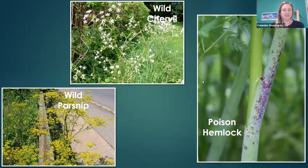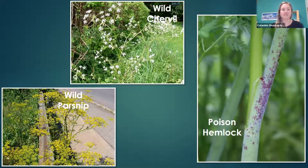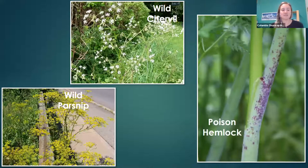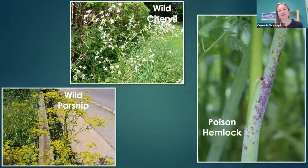The first in the second quiz is wild parsnip, distinguished by its bright yellow inflorescence versus the white flowers of the other species, and mitten-shaped leaves. Wild shirvel is highly branched with smooth stems and can have a deep woody root system. Poison hemlock has really distinct purple blotches on smooth stems.